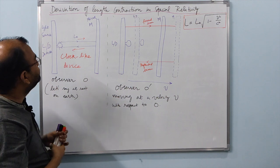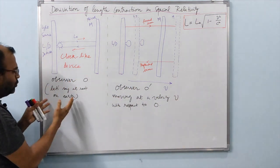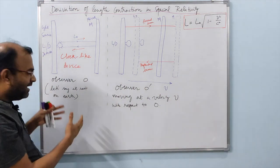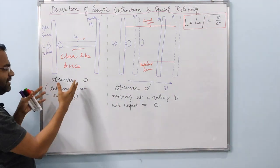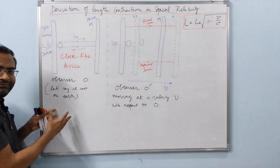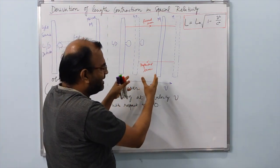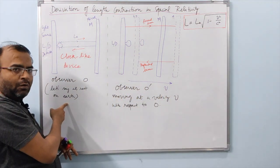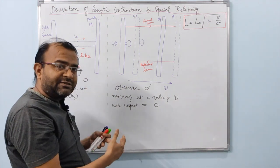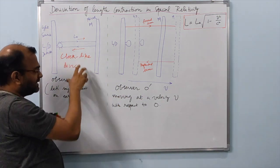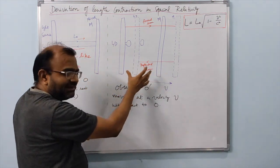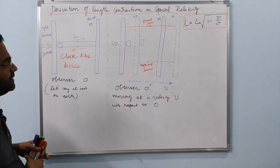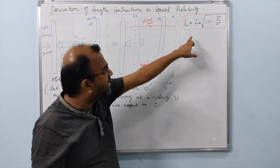This device is held by an observer O who is at rest on Earth — that rest is just an assumption; we are considering Earth to be an inertial frame. If an identical device is carried by another observer O prime who moves with velocity v with respect to observer O, then these two inertial frames are in relative motion with respect to each other, and therefore observer O should be able to measure any length on observer O prime as a contracted length.